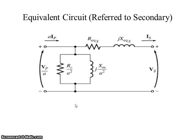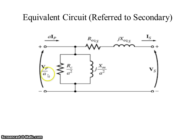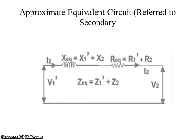The equivalent circuit referred to secondary is shown in the figure; all values are mentioned in the diagram. R_EQS means the resistance equivalent on the secondary side and X_EQS means the reactance equivalent on the secondary side. The resistance equivalent on the secondary side becomes R2 + R1/A² and X equivalent becomes X2 + X1/A². VP/A (primary voltage divided by A) becomes V2, and RC/A² and Xm/A² are the changed values accordingly. In the approximate equivalent circuit referred to secondary, X equivalent is X1 dash plus X2, R equivalent is R1 dash plus R2, and Z equivalent is Z1 dash plus Z2.